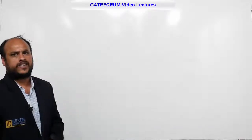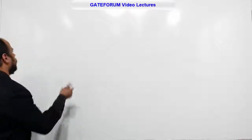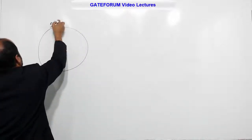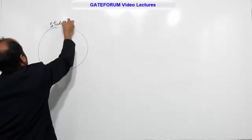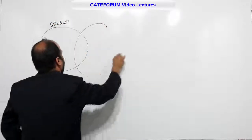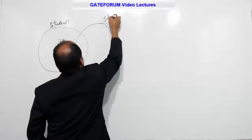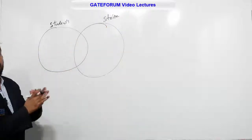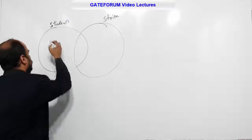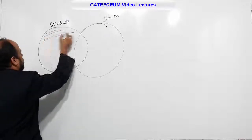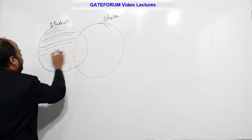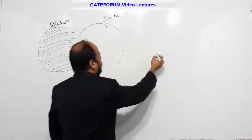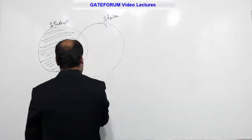Some students were not involved in the strike is given. I use this Venn diagram to represent students, and another Venn diagram to represent strike. This portion represents some students who were not involved in the strike. This is one possibility — this is Venn diagram 1.